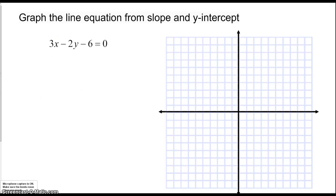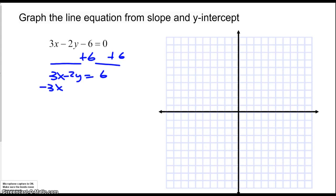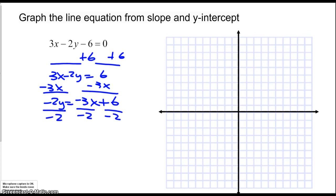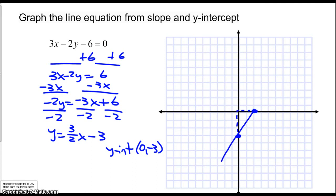Here's another one — pause the video and try algebraic manipulation to isolate y, then read off the y-intercept and slope. Starting with 3x minus 2y equals 6: subtract 3x from both sides to get negative 2y equals negative 3x plus 6, then divide everything by negative 2 to get y equals 3 halves x minus 3. The y-intercept is at 0, negative 3, and the slope is 3 halves — go up 3 for every 2 to the right.